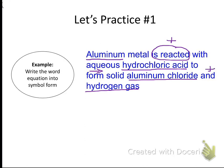Aluminum metal. We have to know the symbol for aluminum - Al. The word metal tells us what state it's in. We know that at room temperature, aluminum is a solid. 'Is reacted with' - we said that's the plus sign. The next thing is aqueous hydrochloric acid.